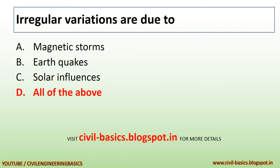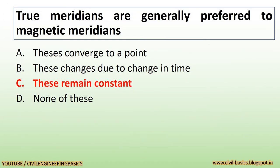Irregular variations are due to magnetic storms, earthquakes, and solar influences. True meridians are generally preferred to magnetic meridians because these remain constant.